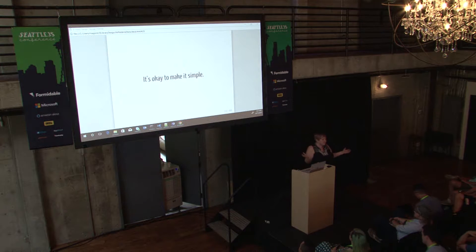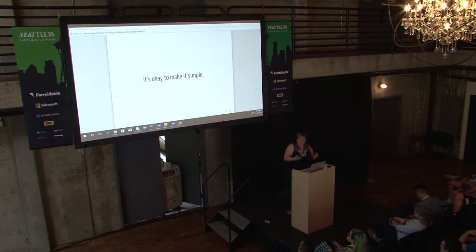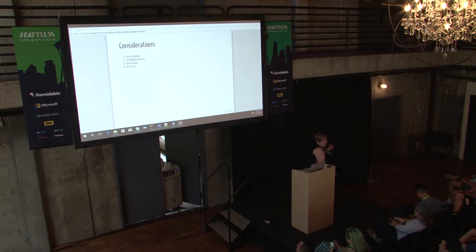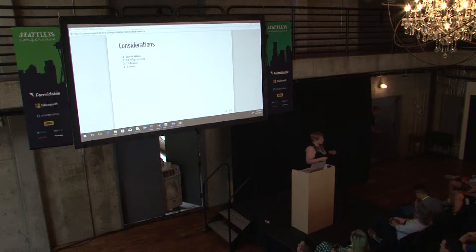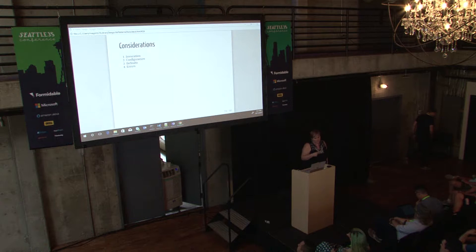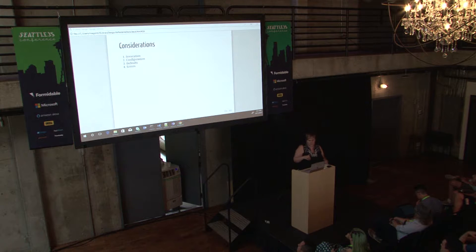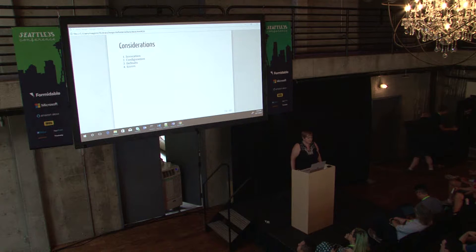So how do you make a library simple and usable and fun? Four things I'm going to go through: Invocation — how do you call that library? Configuration — when we have to change the behavior, how do we set up an API that is conducive to that and lets us extend into the future? Defaults — how do we set up and choose default behaviors? And finally, errors — how do we correctly handle errors?